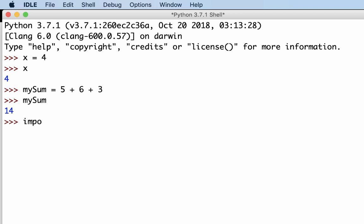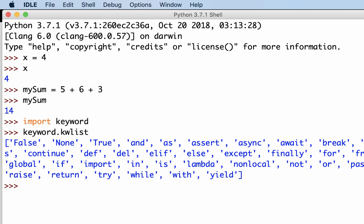If I import the keyword library—you don't really need to know how to do this—but I can type in keyword.kwlist and this command actually tells me all of the words that are reserved in Python at that moment. Sometimes the words change a little bit from Python version to version, so in case you ever need to know, that's how you would know.